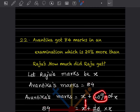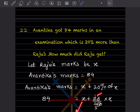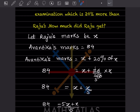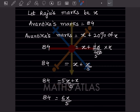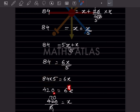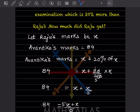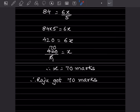So x plus 20 by 100 into x equals 84. Simplifying 20 by 100, that is x divided by 5. Taking LCM: 5x plus x divided by 5 equals 84, giving 6x by 5 equals 84. So 84 into 5 equals 6x, meaning 420 equals 6x, and x equals 420 divided by 6, which is 70. Therefore Raju got 70 marks.